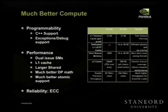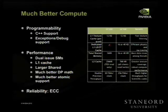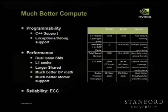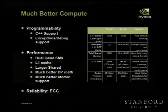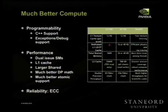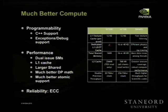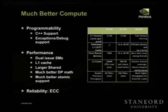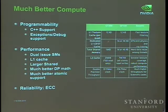The other big focus area is much better compute. For programmability, we added C++ — we only had C before. Exceptions and debug support, to make it easier for programmers to use. For performance, we added dual-issue SMs compared to G80 which had single-issue SMs. Issue rate refers to how fast instructions can be executed by the processor — we doubled it. We added a cache with much larger shared memory, much better double precision floating point, better atomics, and reliability. You can see the differences highlighted: there was no L1 cache in previous generations, and there's a massive improvement in double precision performance.